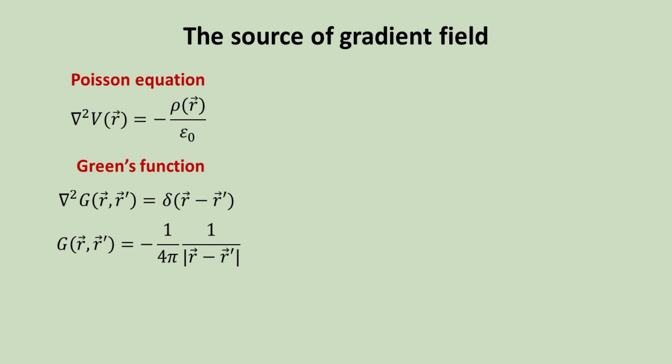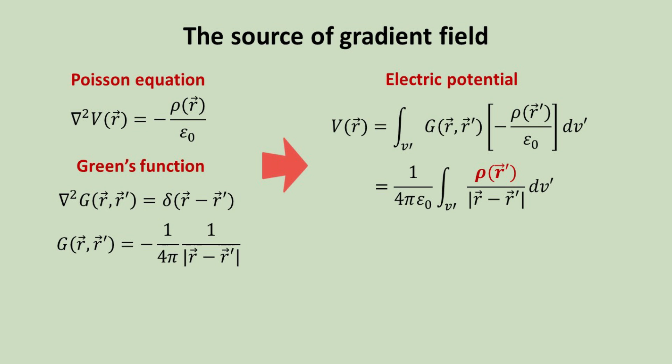Our first step is to try obtaining an expression for the electric potential V from the Poisson equation. We can do this with the help of the Green's function. The Green's function for the Laplacian is a well-known mathematical result, and is given here. The electric potential can then be expressed using the Green's function in terms of the charge density, as shown.